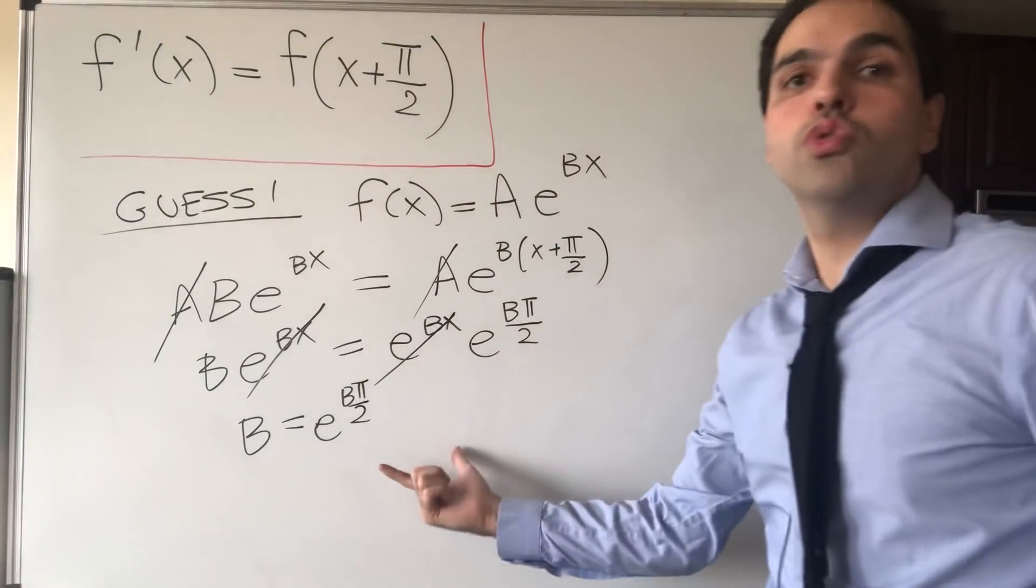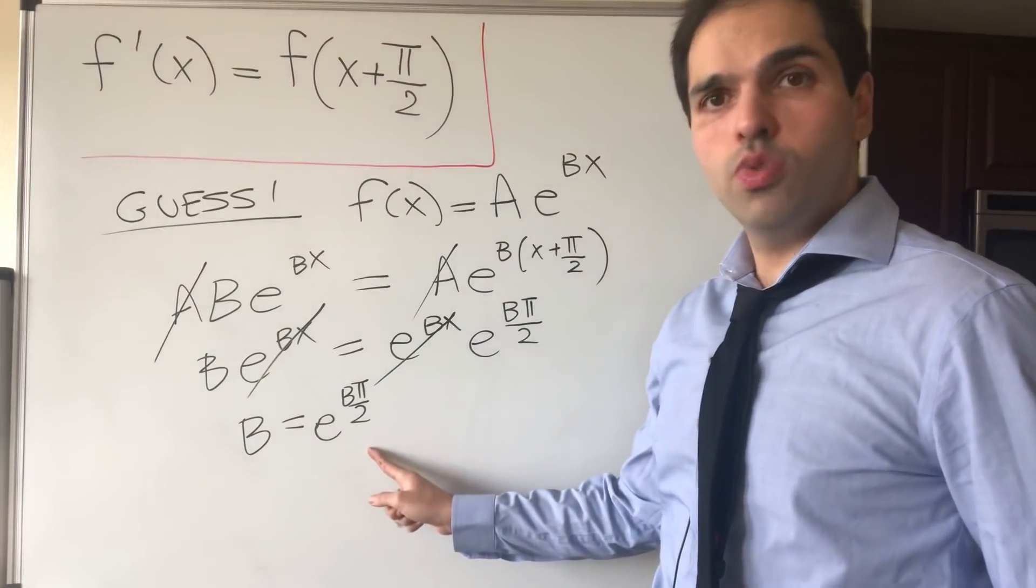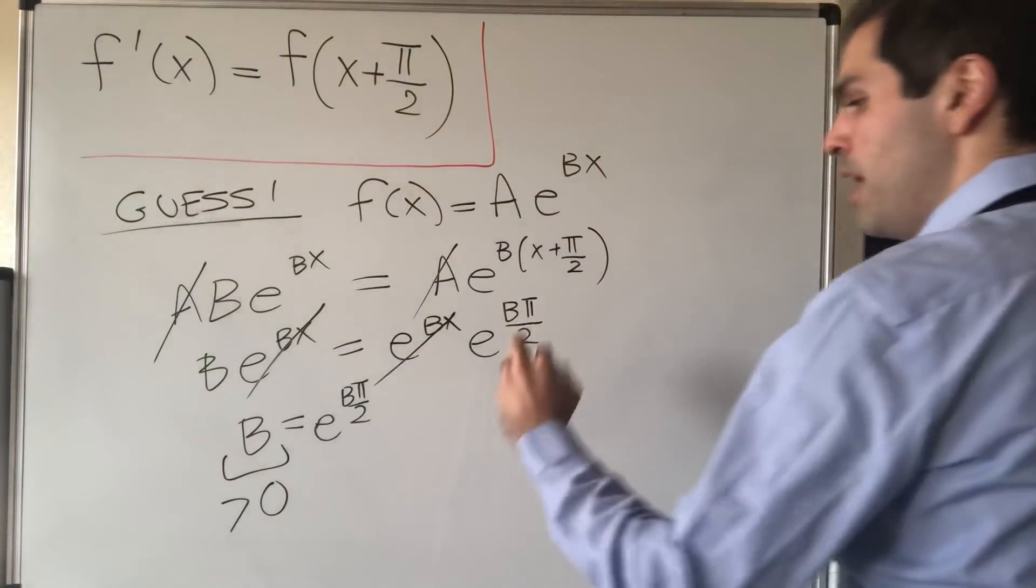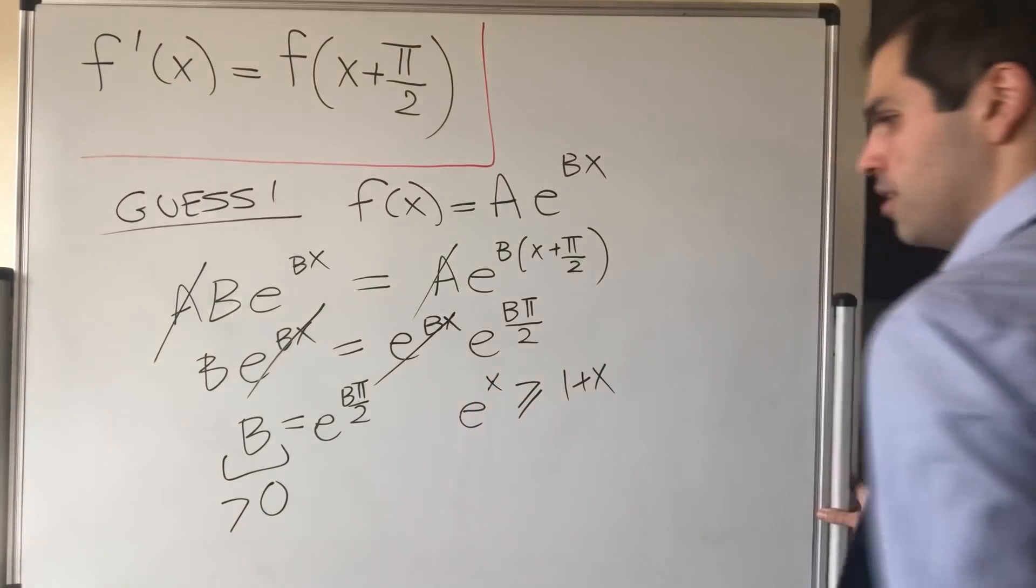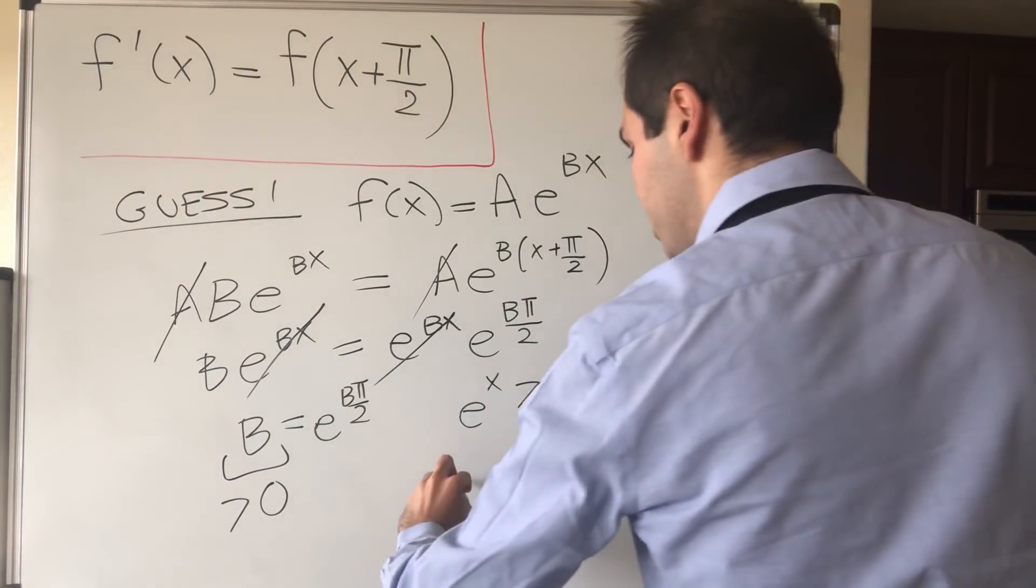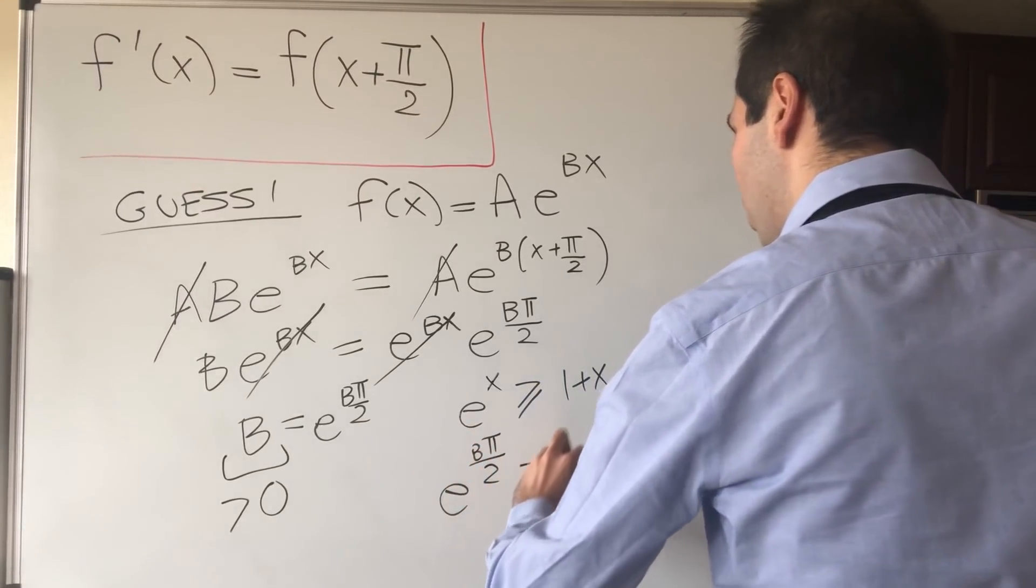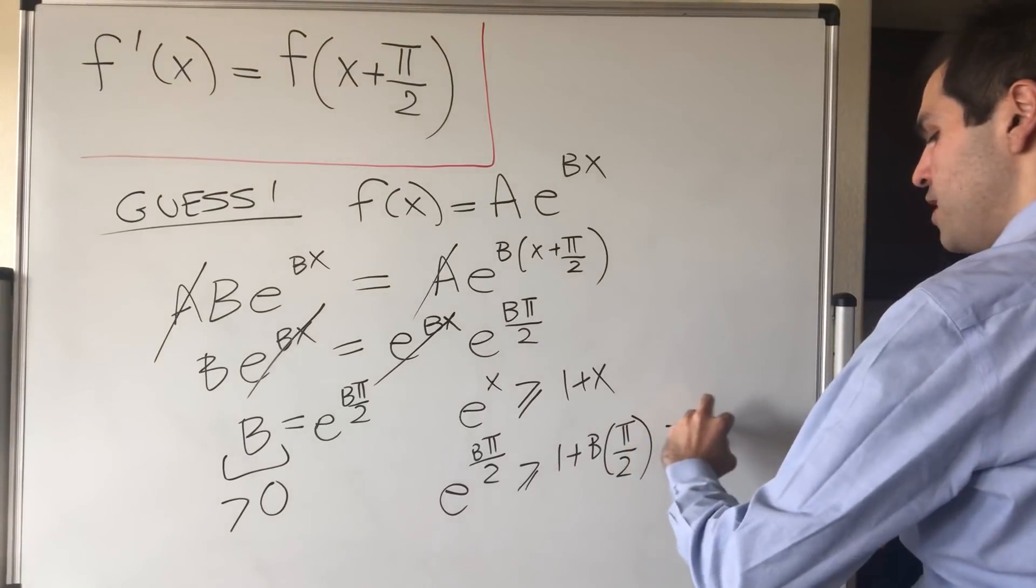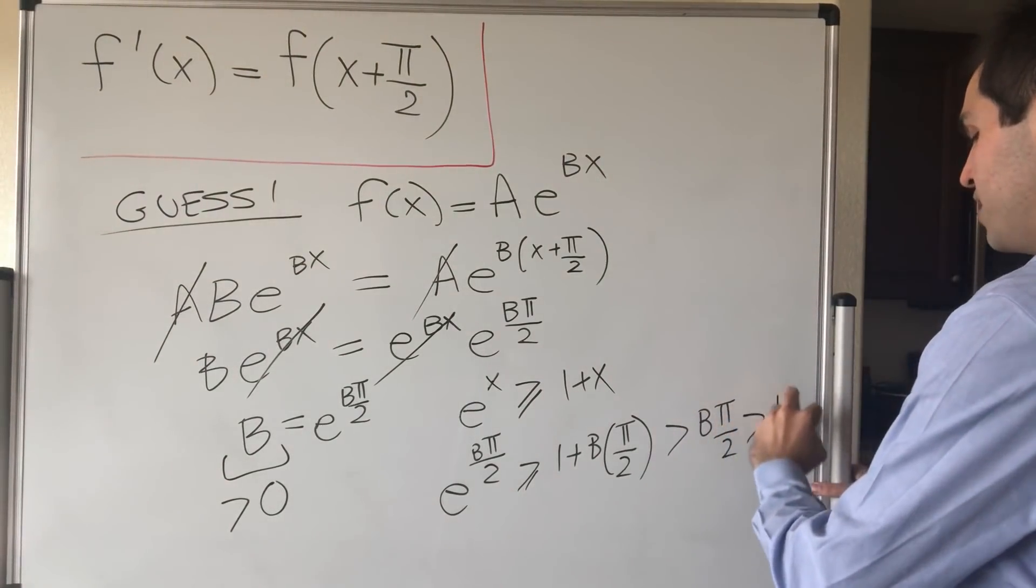But it turns out there's no solution of this, at least in the real case, because if B equals e to the something, this means that B is positive. But now remember, we can show that e^x is greater or equal to 1+x. So therefore, and again this is valid for every positive x, which works here. So e^(Bπ/2) is greater or equal to 1 + Bπ/2. But that's strictly bigger than Bπ/2, and π/2 is bigger than 1, so this is strictly bigger than B.